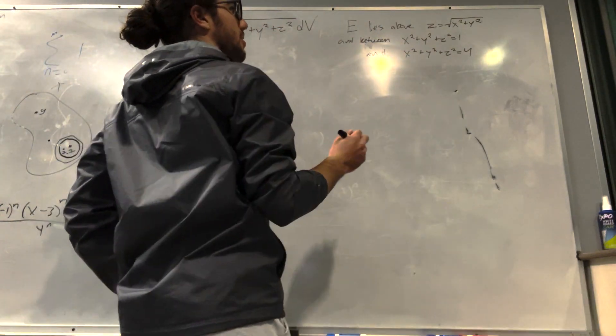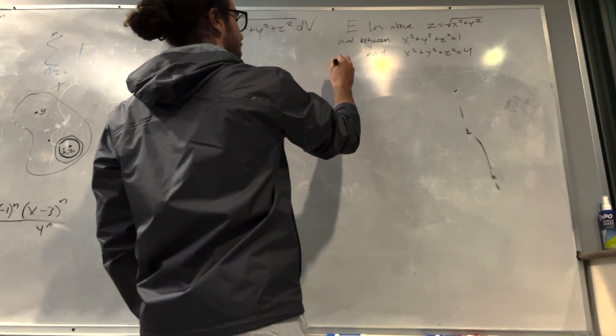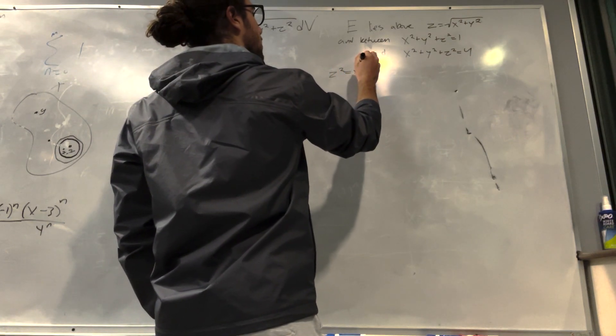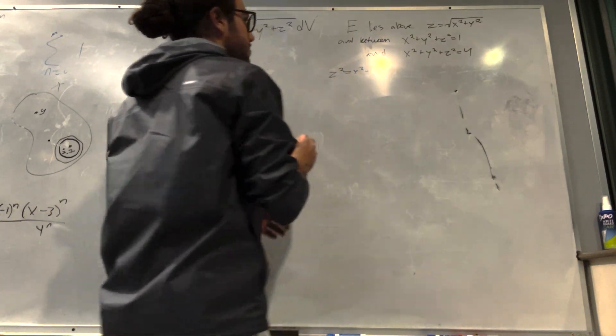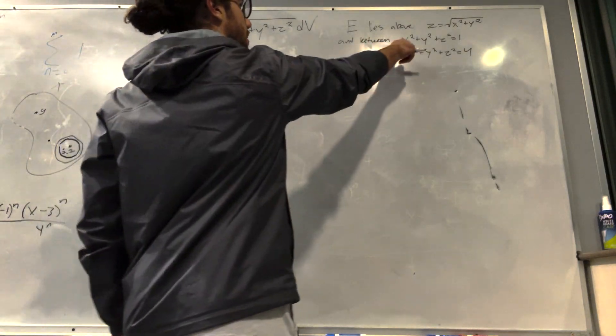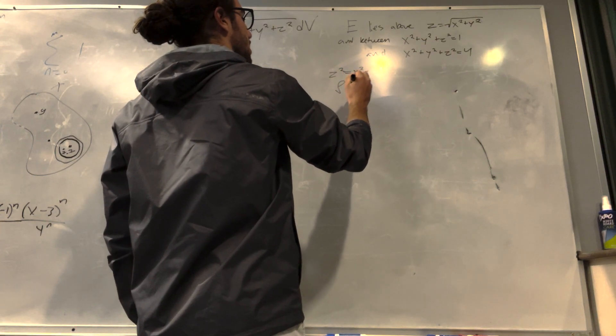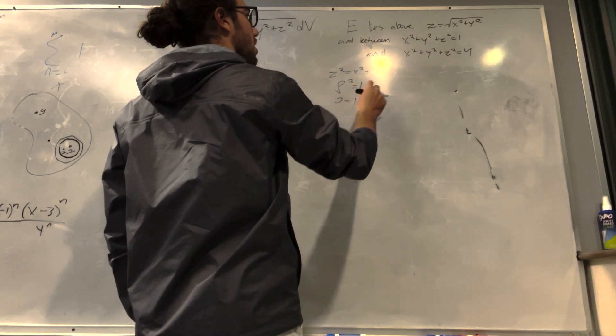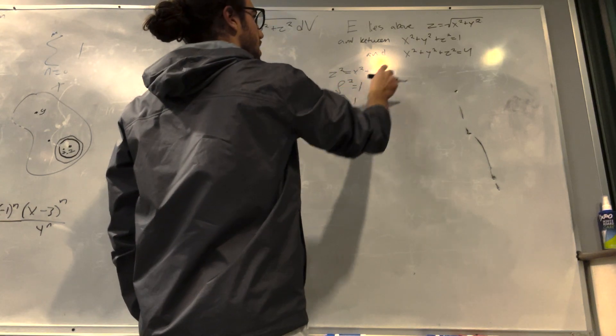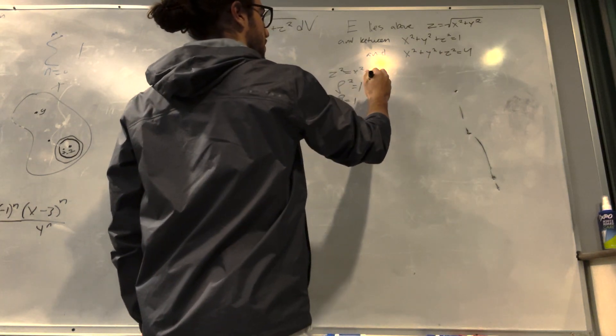So z is equal to square root of x plus y, that's just a cone. Z squared is equal to x squared plus y squared. And then we have it between, which is z squared is equal to 1, so that's just z is equal to 1.